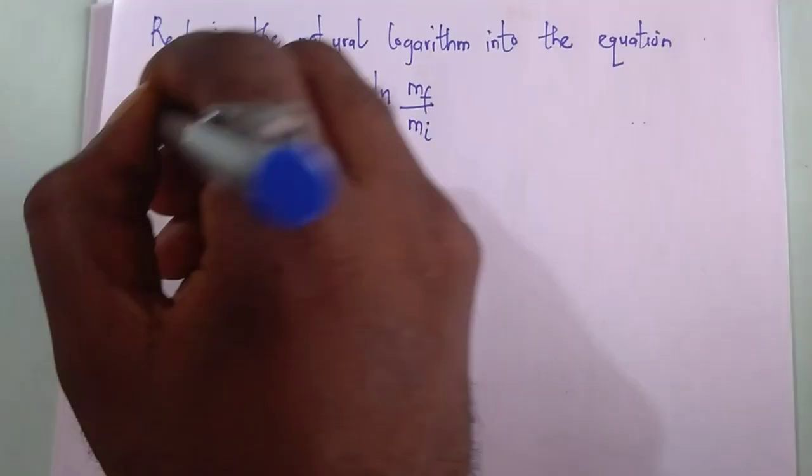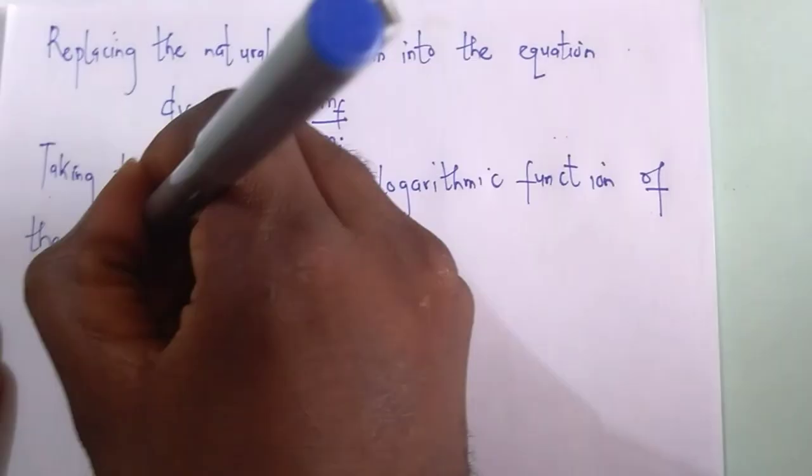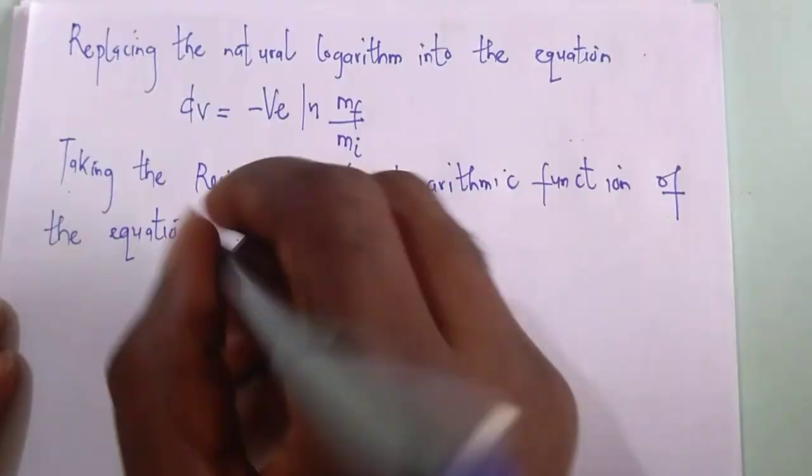Taking the reciprocal of the logarithmic function of the equation, dv equals to ve ln m_i over m_f.